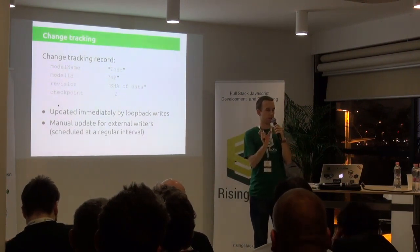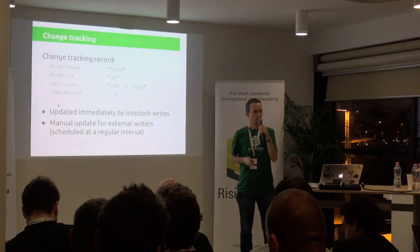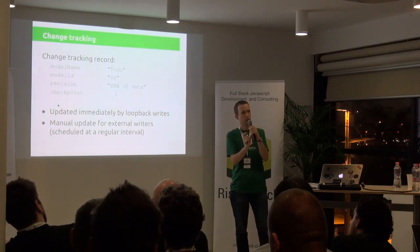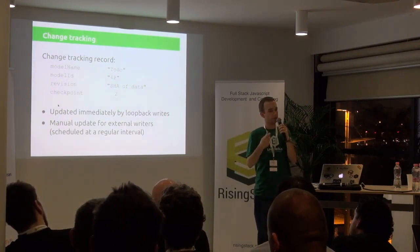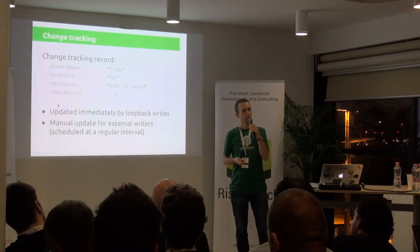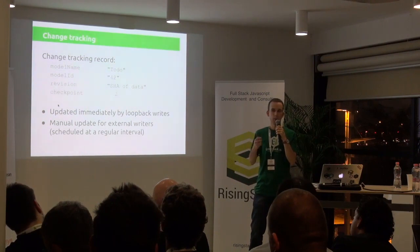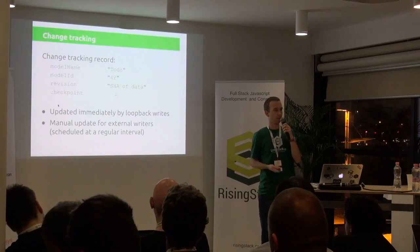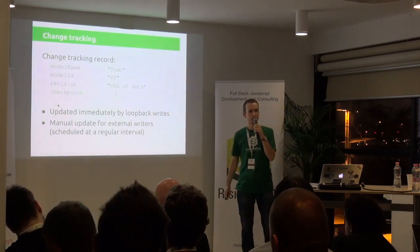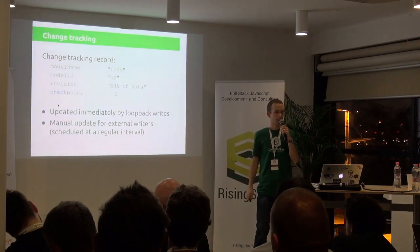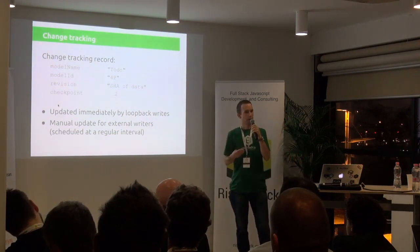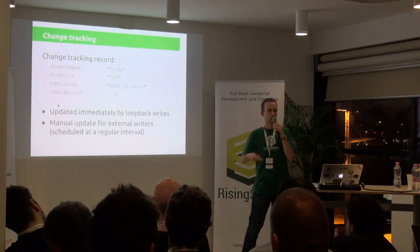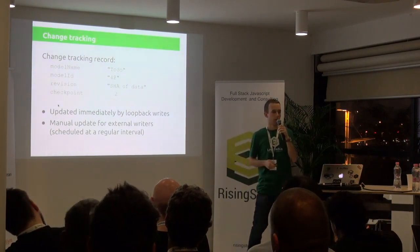Basically, for every model instance, which you can see as a database row, we maintain a checksum of the data as we have last seen them. And then a checkpoint number, which is used to filter change tracking records and optimize synchronization. Whenever you use the Loopback API to create, update, or change the data, these change tracking records are automatically updated for you. The difficult part is how to deal with other people using the database, because it's not only the Loopback application connected to your Oracle — there is also an accounting system, for example. The idea is that you can run a manual update at a given period, let's say every second, where we basically crawl the data and find out new records and update your change tracking records. So you know what has been changed.